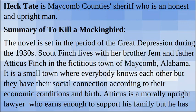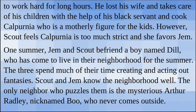Summary of To Kill a Mockingbird: The novel is set in the period of the Great Depression during the 1930s. Scout Finch lives with her brother Jem and father Atticus Finch in the fictitious town of Maycomb, Alabama. It is a small town where everybody knows each other but they have their social connections according to their economic conditions and birth. Atticus is a morally upright lawyer who takes care of his children with the help of his black servant and cook Calpurnia, who is a motherly figure for the kids. However, Scout feels Calpurnia is too strict and favors Jem.